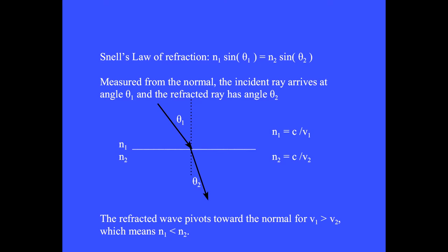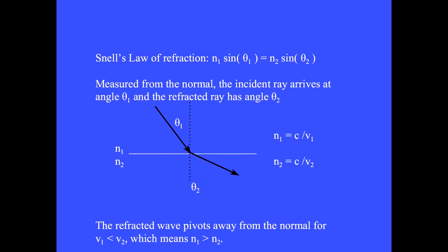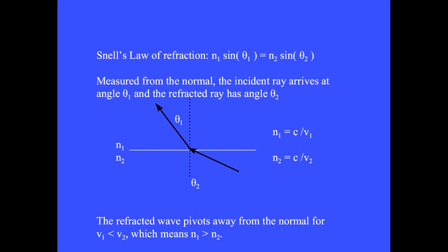When the waves move from a region of low velocity, the refracted wave pivots away from the normal. The path of the wave is the same whether moving downward or when moving upward. Nature doesn't care which direction the wave is traveling.